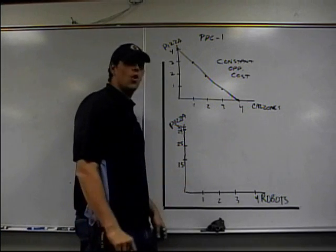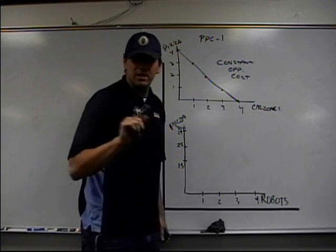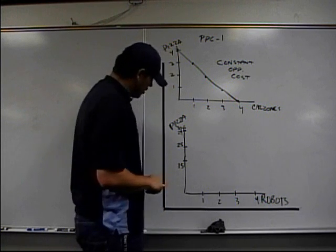Now look down here. Pizzas and robots, not going to be constant opportunity cost because the resources are not easily adaptable to both goods. Take a look.